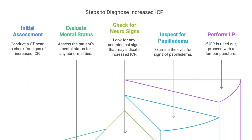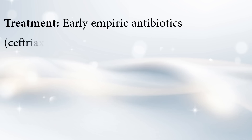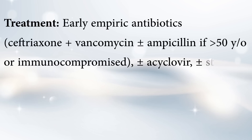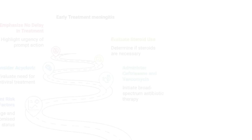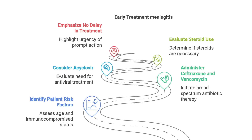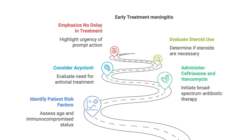Treatment for meningitis needs to be started fast — super important. Start empiric antibiotics early, meaning broad-spectrum antibiotics even before you know exactly what's causing the infection. The specific ones mentioned are ceftriaxone and vancomycin, and they add ampicillin if you're over 50 or have a weakened immune system. They also mention potentially adding acyclovir for viruses and even steroids sometimes. But there's a huge warning: don't delay antibiotics. With meningitis, every minute counts.